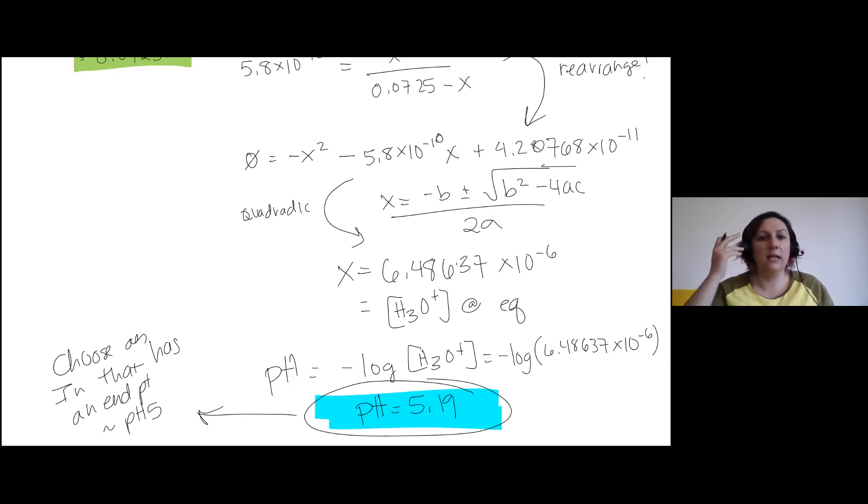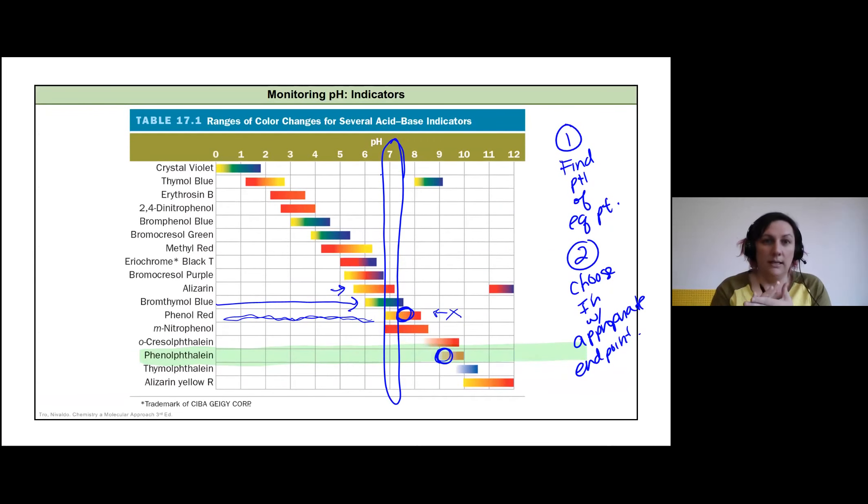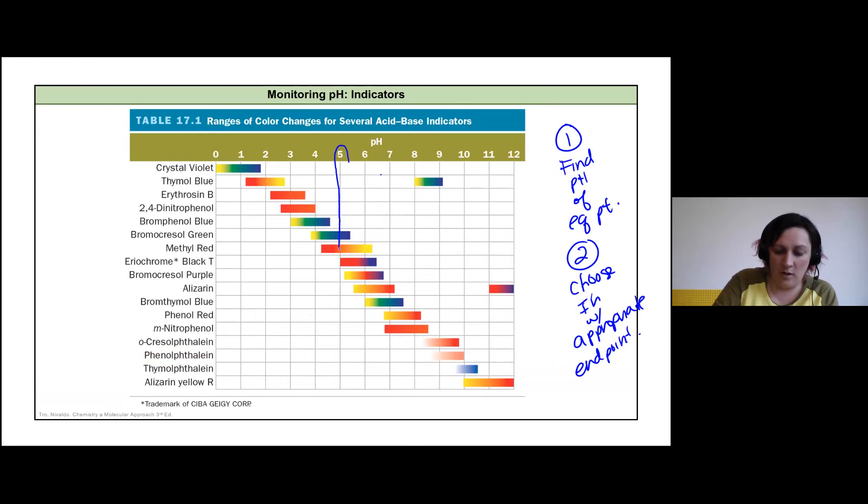So let's take a look again at our set of pHs. I'm going to erase this piece here. And we are going to go look for something around pH 5.1, but I mean like how picky can we really be here? Right.